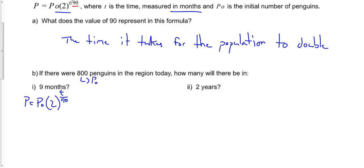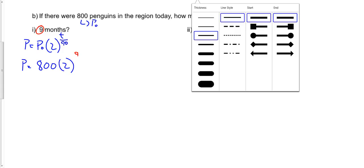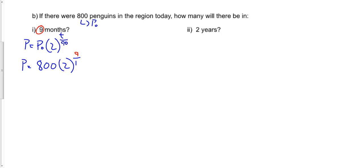And so what I'm going to do is I'm going to substitute in my value for P0. So final population is equal to 800 times 2. And I know that the time that I'm looking for here is 9 months. So I'm going to substitute that actual time into my equation. So I've got 9 divided by 90.